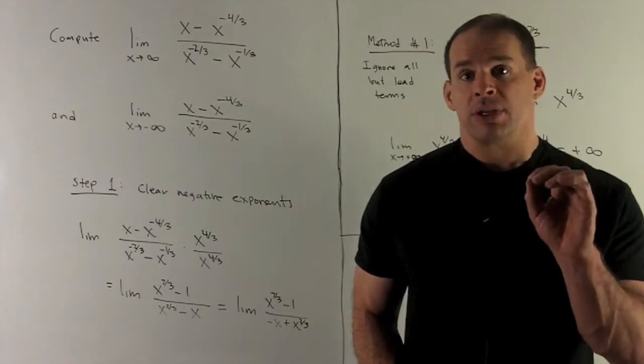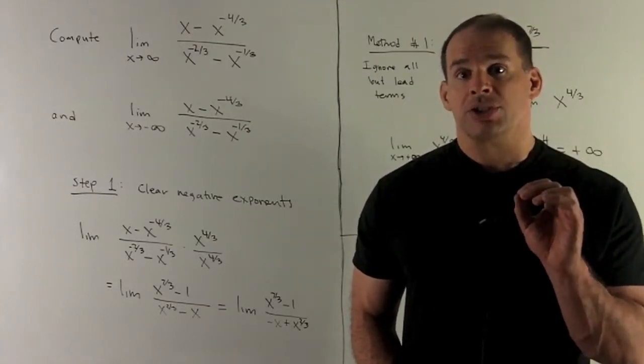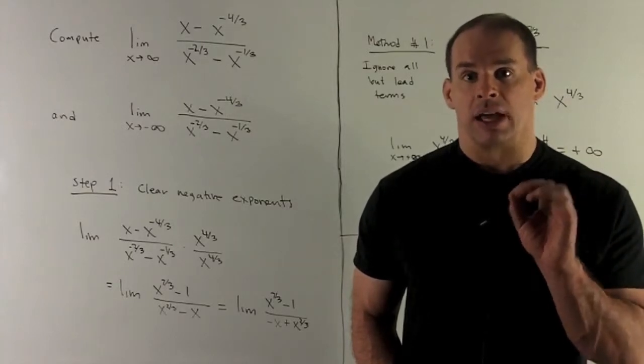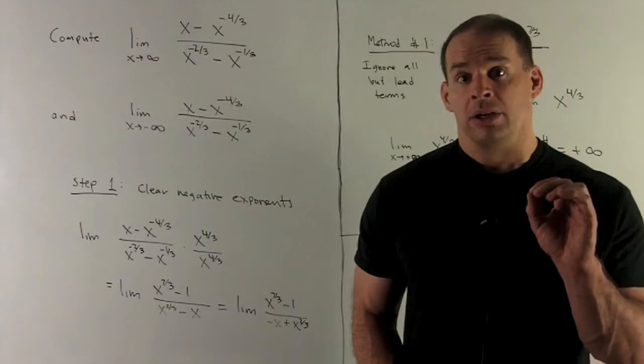Now, my lead terms for numerator and denominator are going to be x to the 7 thirds and minus x. Note the exponent of x is 1, and 1 is bigger than 2 thirds.